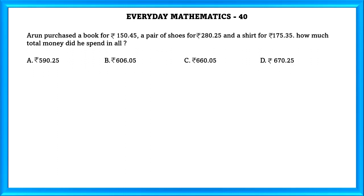40: Arun purchased a book for Rs. 150.45, a pair of shoes for Rs. 280.25, and a shirt for Rs. 175.35. How much total money did he spend in all? Adding up we get 606.05. That is our answer, B.